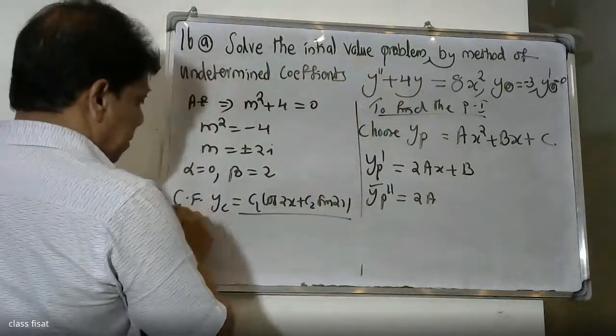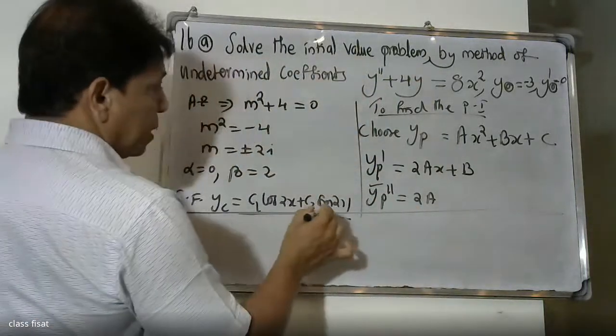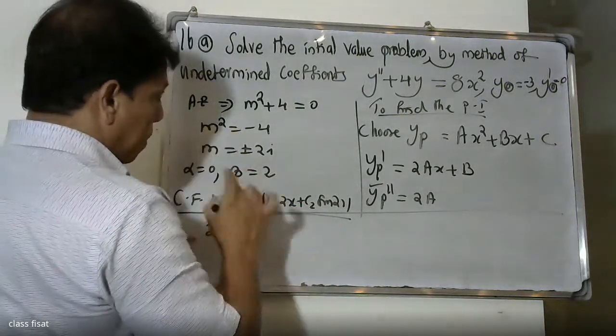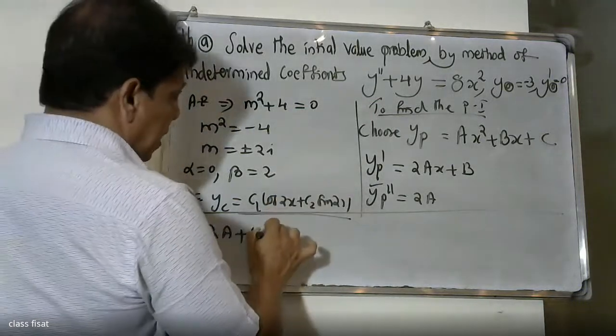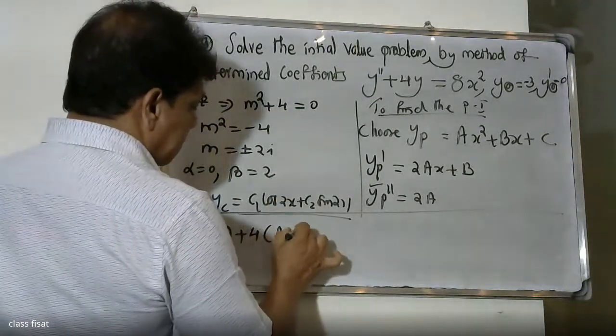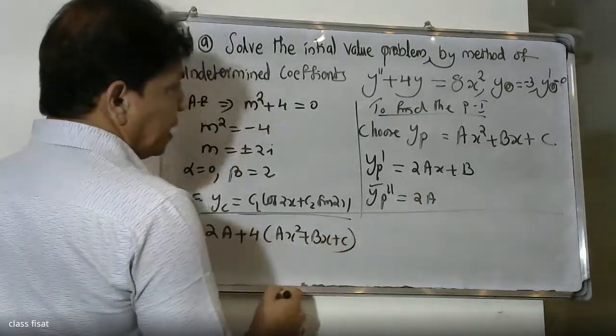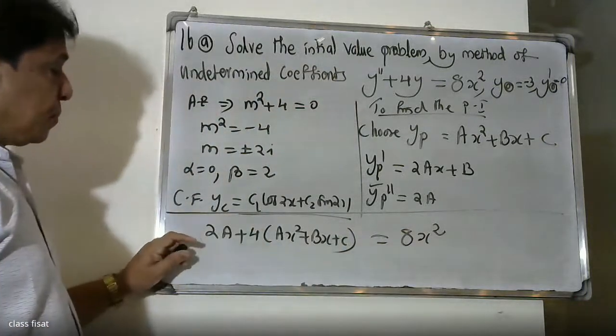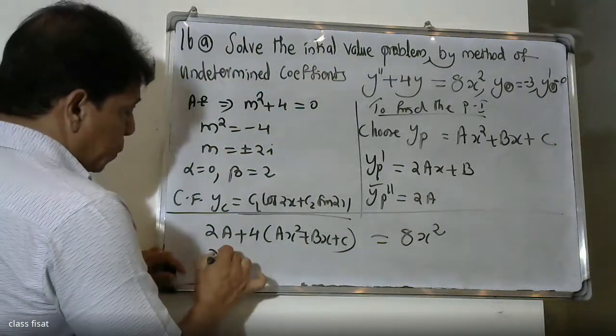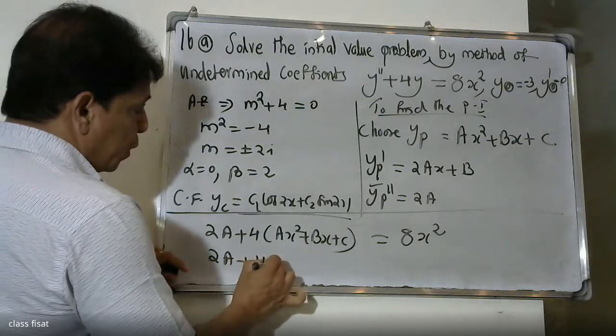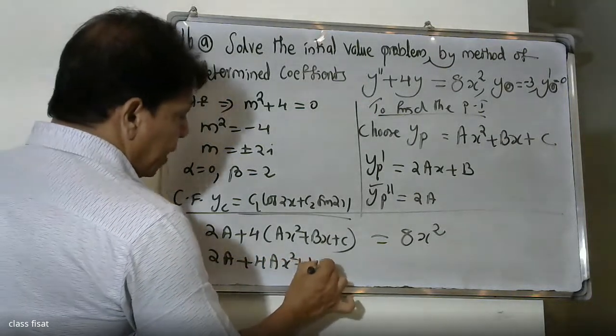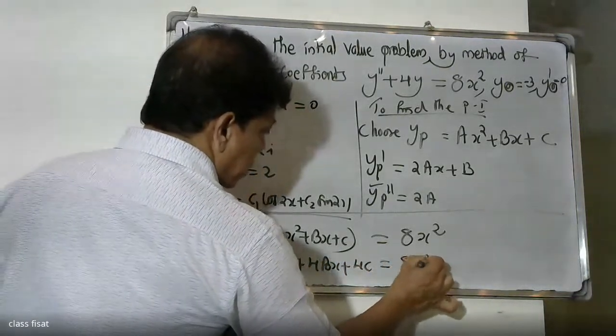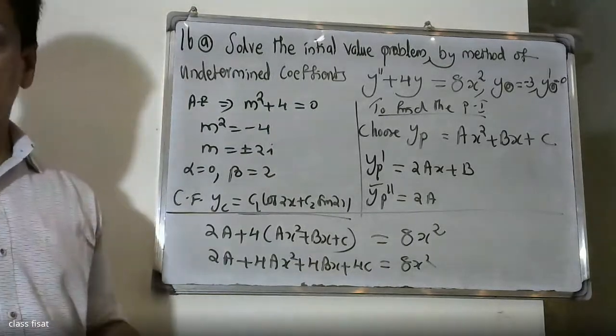Substituting into the given equation: yp'' + 4yp = 8x². This gives 2A + 4(Ax² + Bx + C) = 8x².